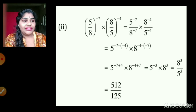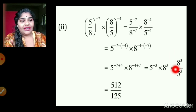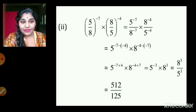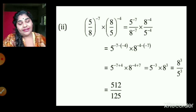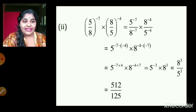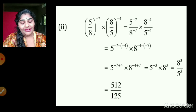Now 8 raised to 3 is kept in the numerator. And 5 raised to negative 3 is brought to the denominator to make the exponent positive, giving 8 raised to 3 upon 5 raised to 3. Solving: 8 raised to 3 is 512 and 5 raised to 3 is 125, so the answer is 512 upon 125.